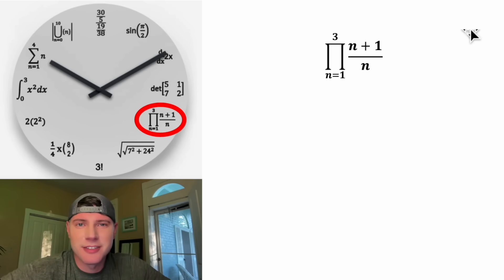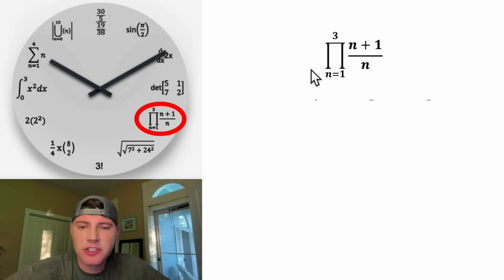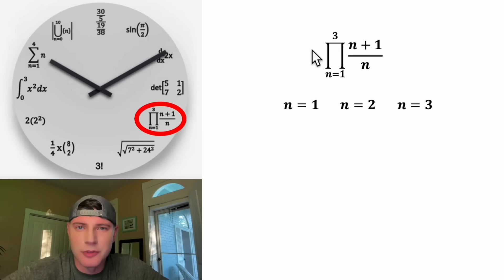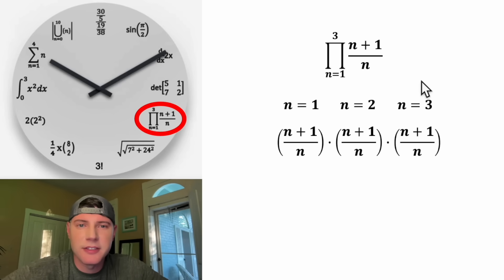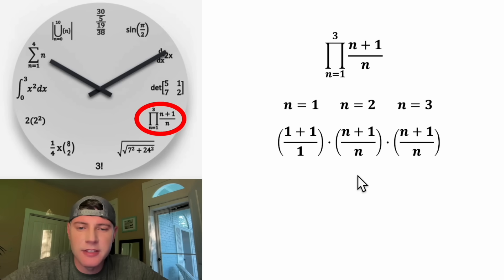Now let's look at the 4 o'clock slot. This is a giant pi symbol, meaning we're going to take a product. The n equals 1 on the bottom and 3 on top means we start at n equals 1, then go to n equals 2, then n equals 3, and stop there. The expression n plus 1 over n tells us what we multiply each time. For n equals 1, 2, and 3 we substitute those values in.